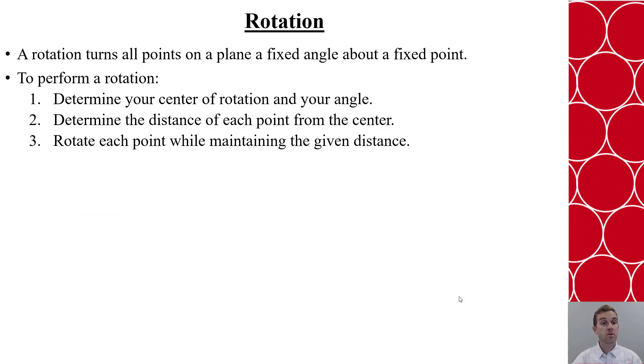Now with a rotation, we're going to turn all points on the plane a fixed angle about a fixed point. To perform the rotation, we first need to determine what is that center of our rotation and what angle we're going to rotate. We then need to also recognize the distance from each point to the center and then rotate each of those points in the pre-image while maintaining the given distance.